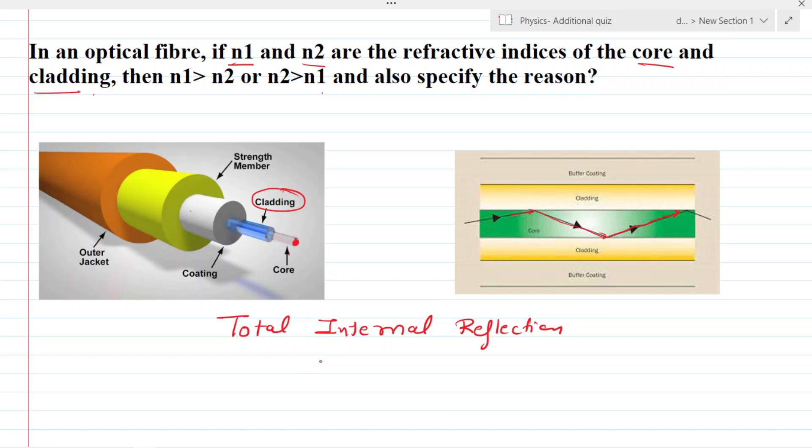So here, the core material having refractive index n1 and outer material has refractive index n2. So that means n1 should be greater than n2. So this is our answer, and the reason is total internal reflection.